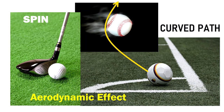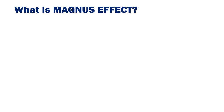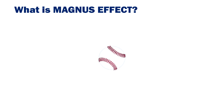This aerodynamic effect is called the Magnus effect. So what is this Magnus effect? The Magnus effect is an aerodynamic effect which can be seen on a rotating circular object such as a ball.